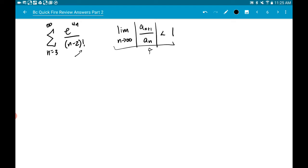So the hardest part is just setting these up. So we're going to take the limit as n approaches infinity. And then what we have is kind of like an e to the four, and then n gets replaced with n plus one. And then we have an n plus one minus two factorial. And then get in the habit of instead of writing a nice complex fraction, you're always going to be able to multiply the reciprocal.